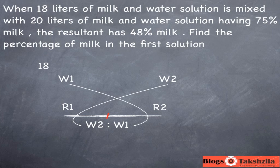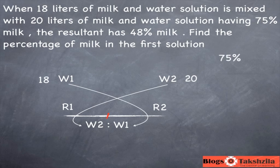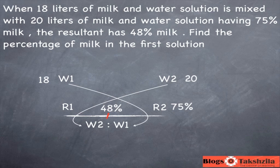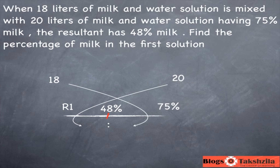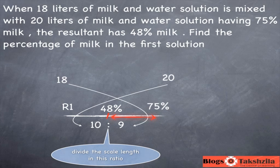For this next problem with the scale approach: 18 liters goes into the weight part, 20 liters goes into the weight part for the other solution. 75% is rate two — put it on the scale. Weight one and weight two are known, rate two is known, but rate one is unknown. The resultant mixture has 48% so put that in the middle. The difference between 75 and 48 is 27. The ratio 18 to 20 simplifies to 9 to 10, which flips to 10 to 9, so 9 corresponds to 27, meaning x equals 3 and 10x equals 30. Then 48 minus 30 equals 18%.